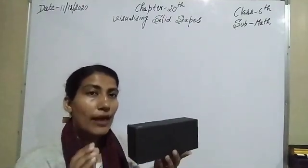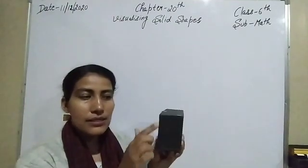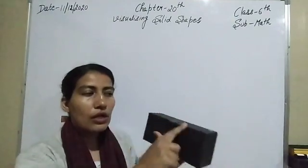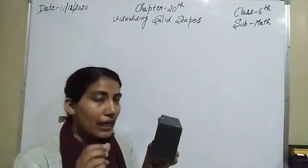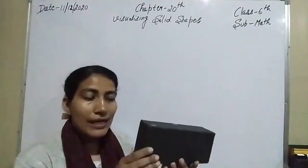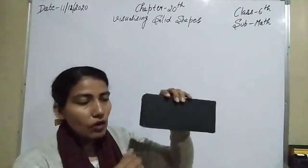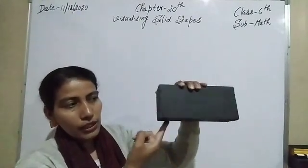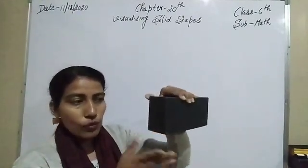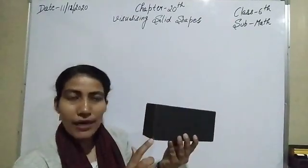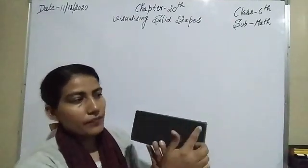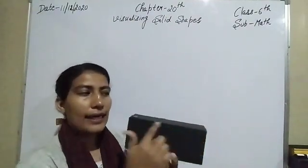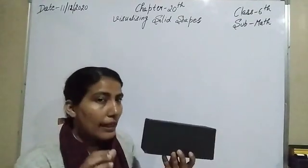Afterwards, if I have to count the number of edges — these are called the edges of the cuboid — let's start from the bottom position: here is one, two, three, and four. Now look: five, six, seven, eight, nine, ten, eleven, and twelve. So twelve edges are there.